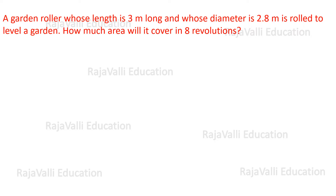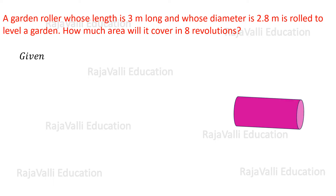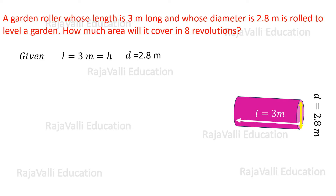The garden roller is in the shape of a cylinder. Its length is 3 meters, that is equal to the height of the cylinder, and the diameter is 2.8 meters, so r is equal to 2.8 divided by 2. The question is: how much area will it cover in 8 revolutions?